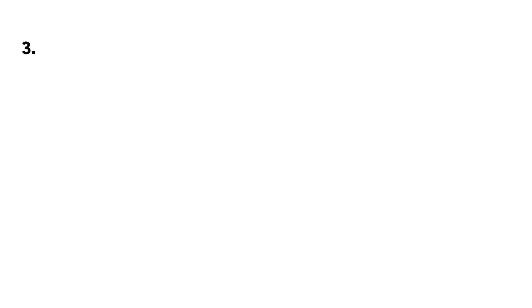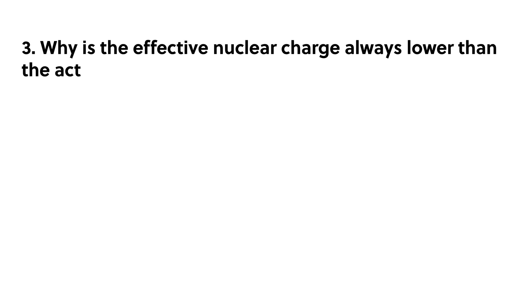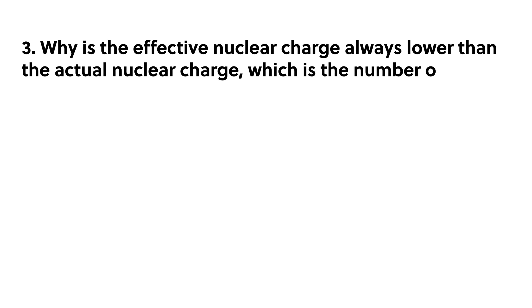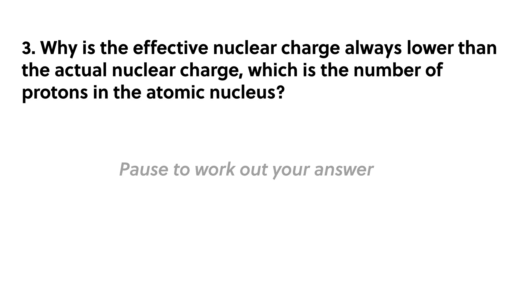Review question three: why is the effective nuclear charge always lower than the actual nuclear charge? The effective nuclear charge is lower than the actual nuclear charge because it accounts for the electron shielding effect that results from inner or core electrons shielding the outer valence electrons from the attractive force of the atomic nucleus.